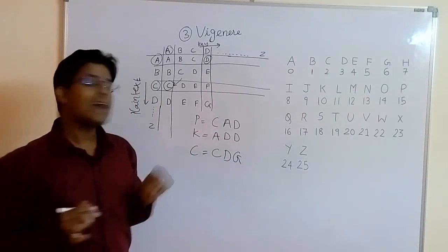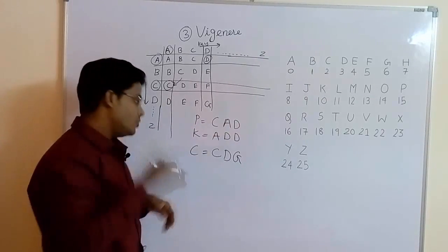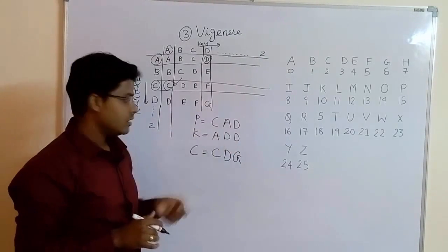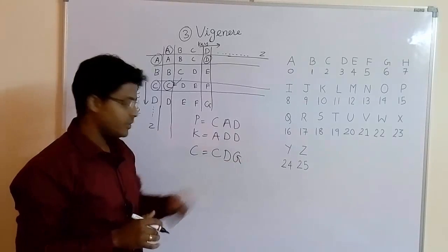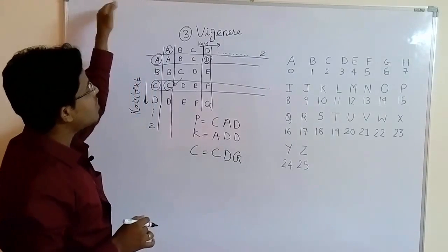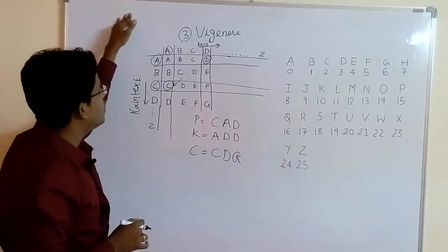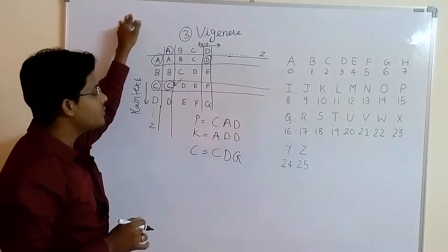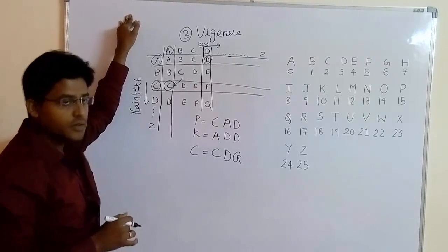So the answer for the plain text C, A, D using key A, D, D is cipher text C, D, G. This is how the encryption process is done using Vigenère cipher method.